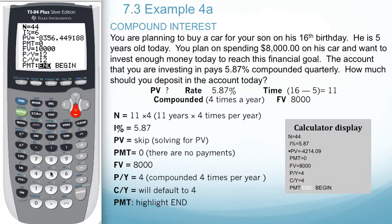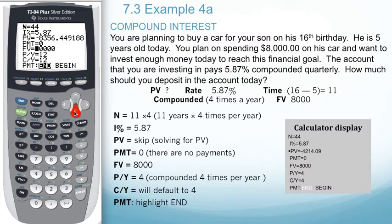The interest rate is 5.87. We're going to arrow down and press past the present value. There is no payment as well, so we'll go to future value. In this case, we want it to be $8,000. Then arrow down again — the payments per year and compounding periods per year will be four.